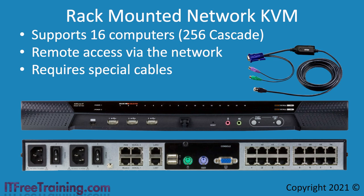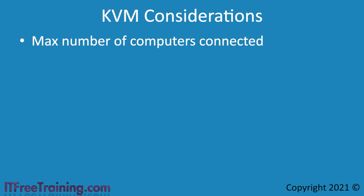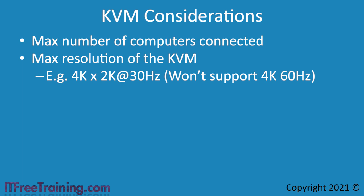I will next look at what you should consider before purchasing a KVM. The first is the maximum number of computers you are planning to connect — the more computers you can connect, the more expensive the KVM will be. Generally, the larger KVMs are used in server rooms. The next point to consider is the maximum resolution that you want the KVM to support. It is important to check this carefully. For example, you will find some KVMs on the market that support 4K, however only at 30 Hz. Before purchasing, check the maximum Hz it supports as well. Even though the KVM may say it supports higher resolutions, cheaper KVMs may have problems supporting these resolutions. With KVMs, you get what you pay for.